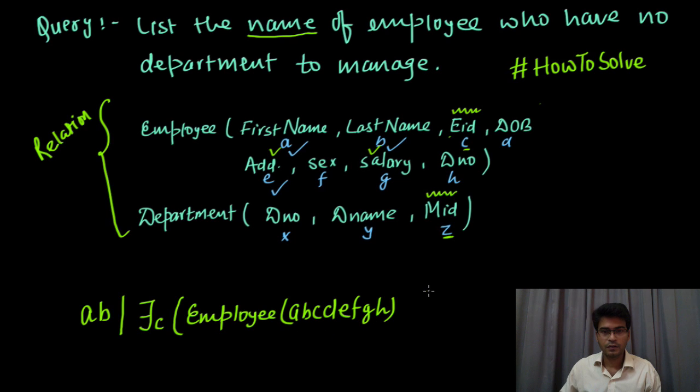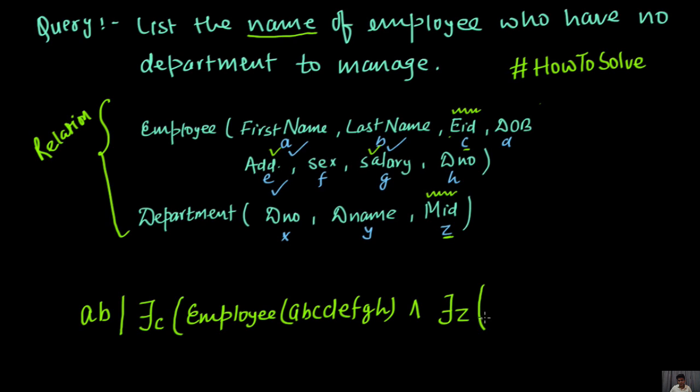Now we have to see so this is one condition now we write and as always then we have to see if there exists some z and this z belongs to department.